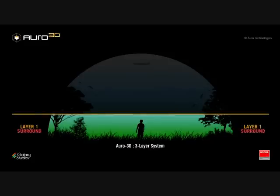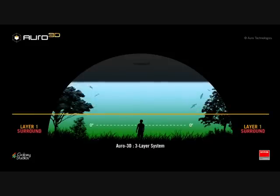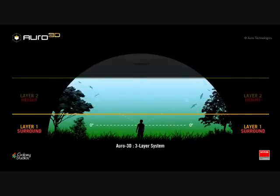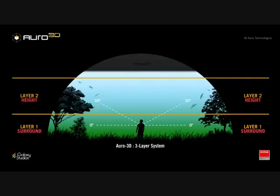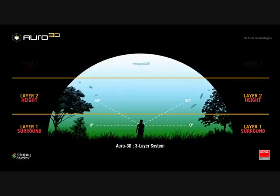Spatial sound can be divided into three different layers: sounds coming from the horizontal plane around us; above this is a second layer that reveals both direct sounds and height reflections, which are important for our brains to better understand sounds originating in the first layer; and the third layer reveals sounds that come from directly above us — also known as the Voice of God channel.